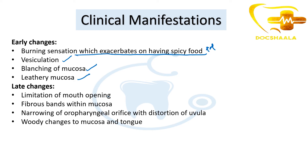The late changes include limitation of mouth opening — TMJ movement is arrested — then fibrous bands within the mucosa, and narrowing of the oropharyngeal orifice with distortion of the uvula.